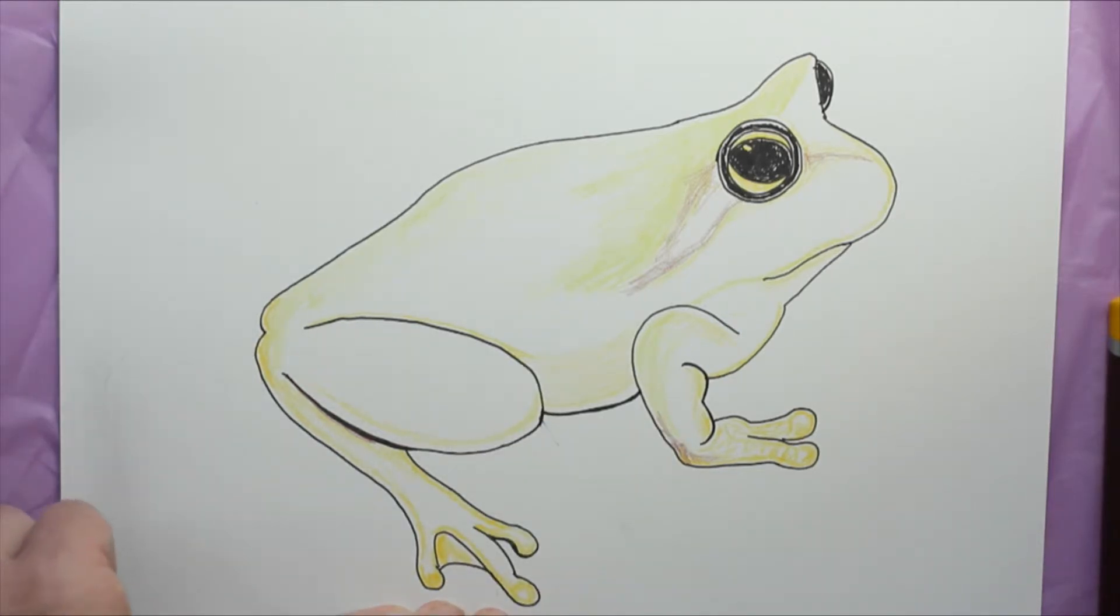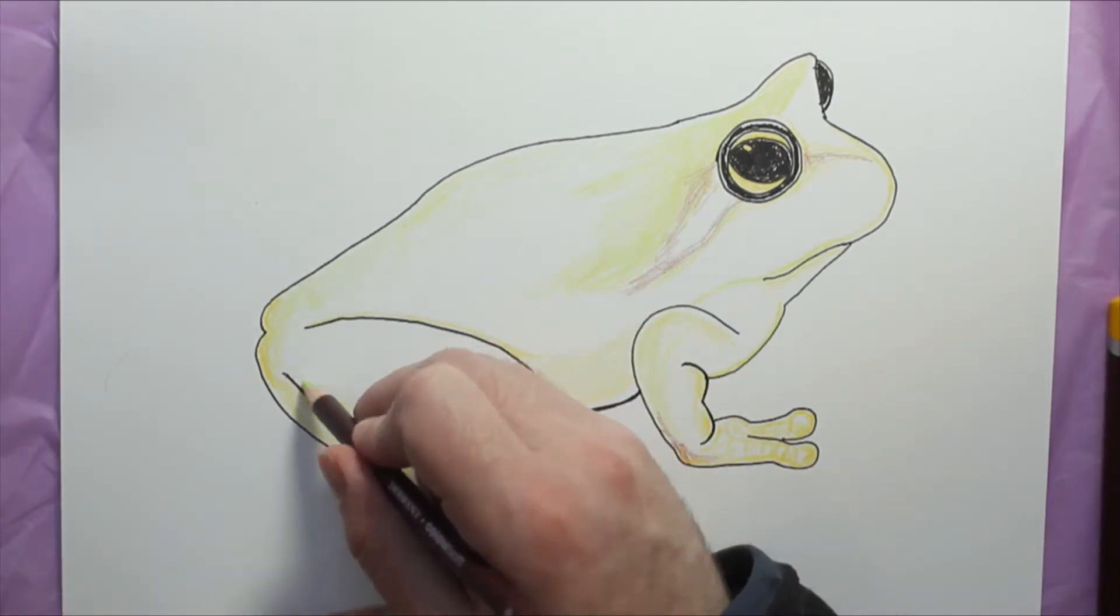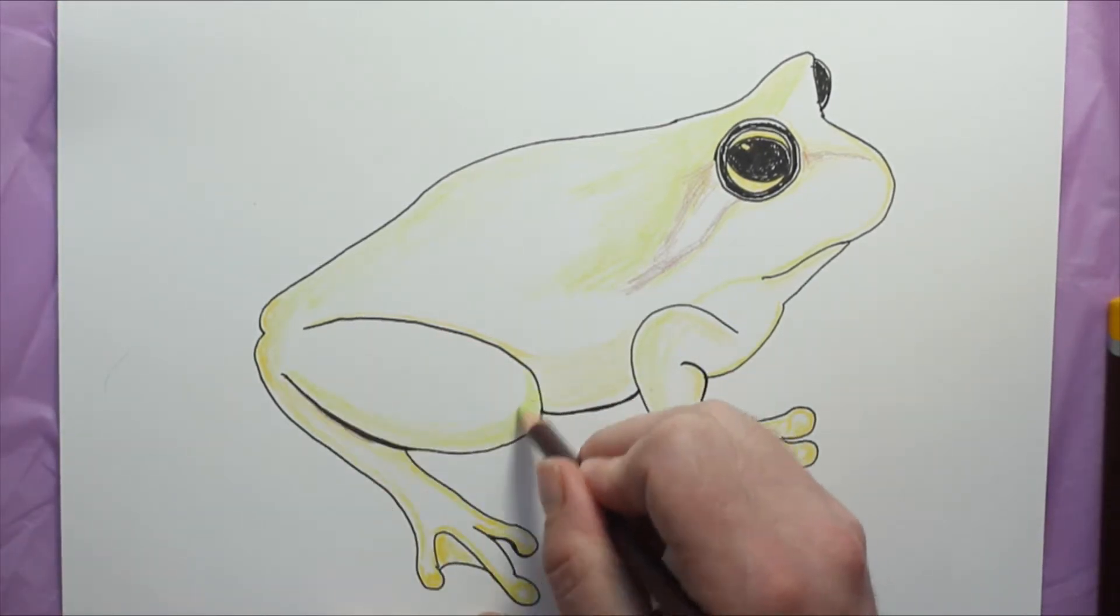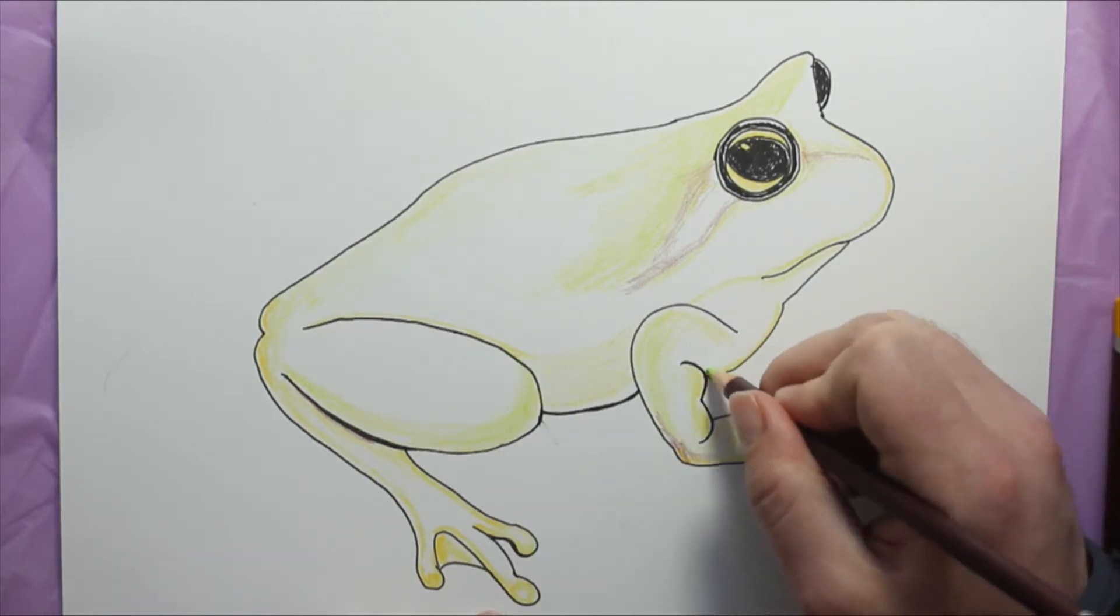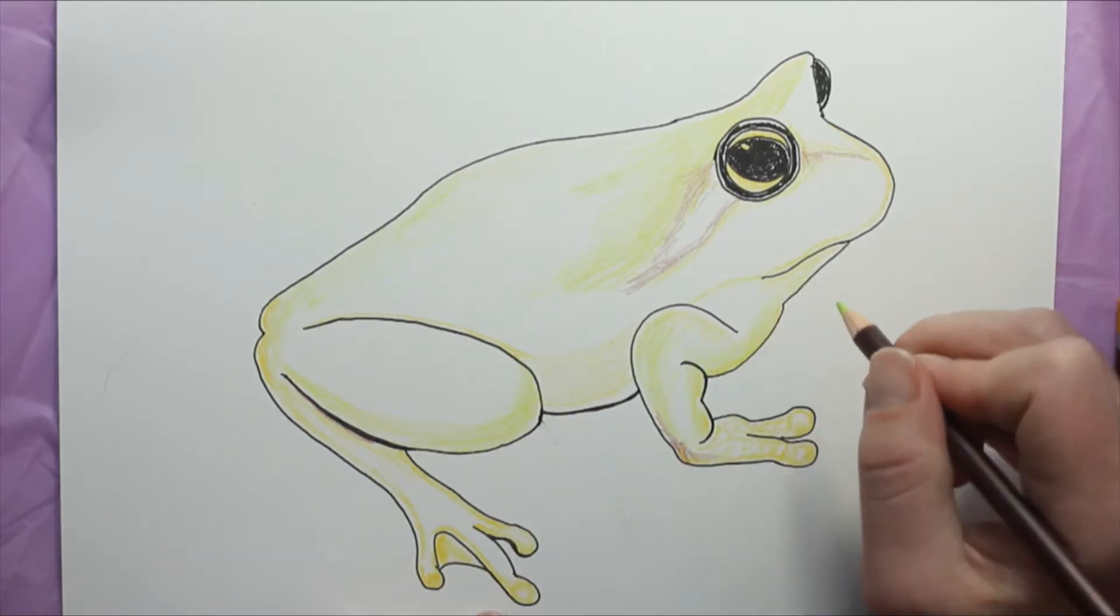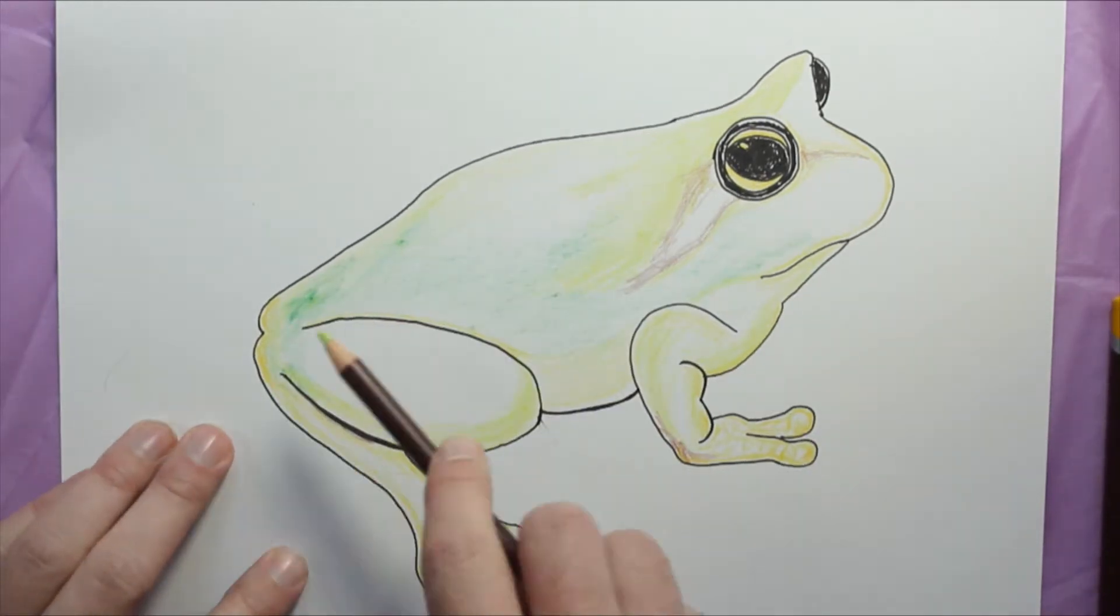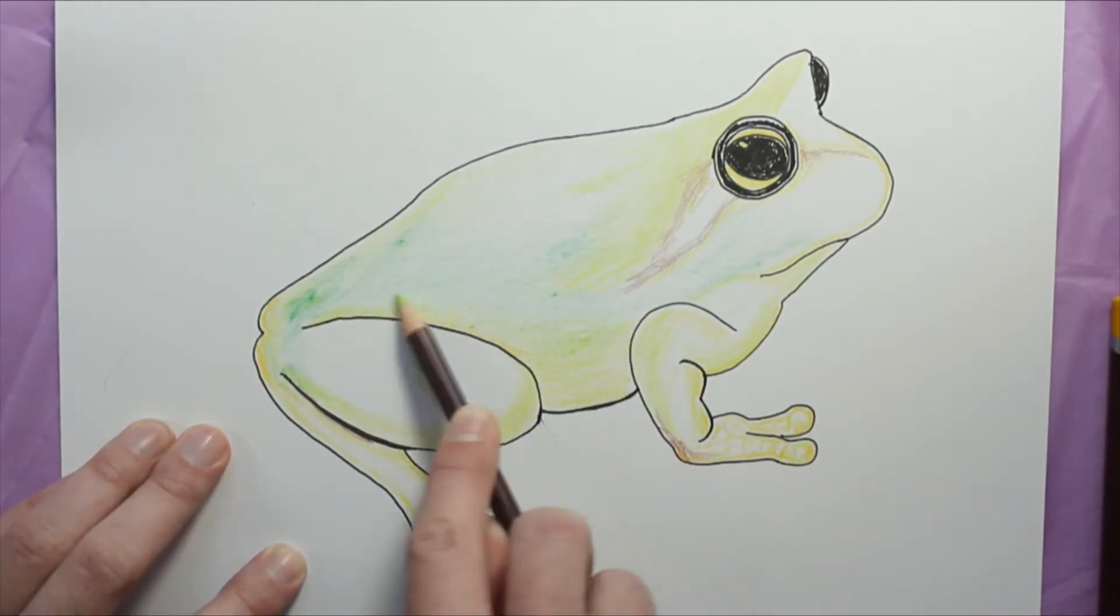Frogs come in all kinds of colors, and the more colorful they are, the general rule is the more poisonous they are because it's a warning to predators that they're poisonous.